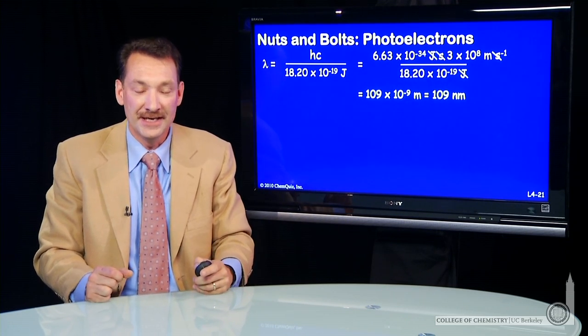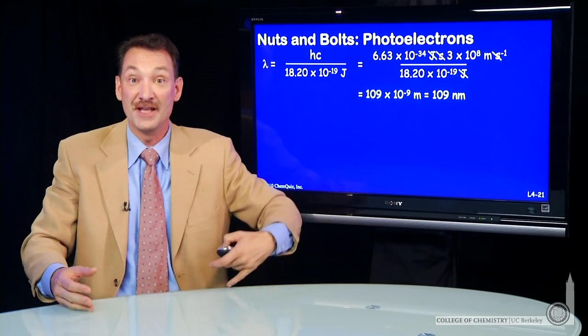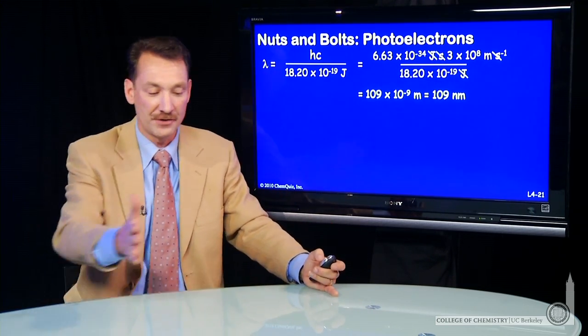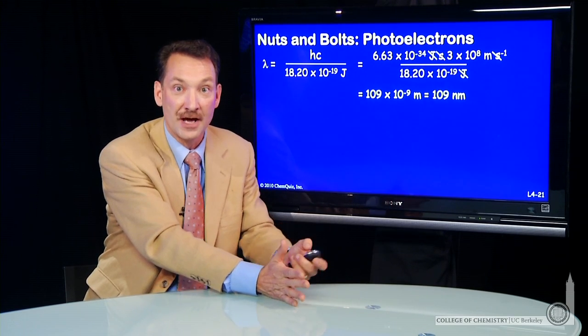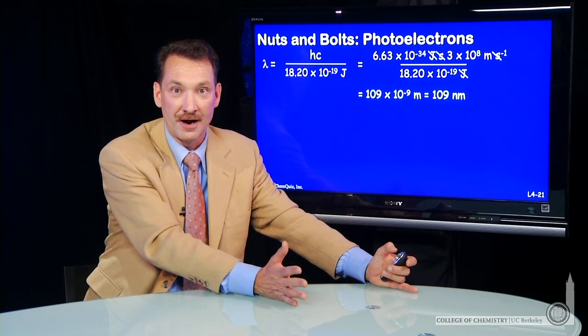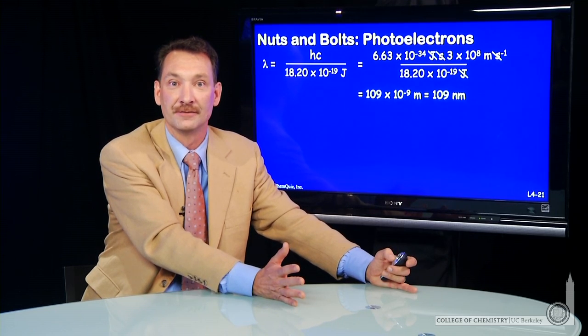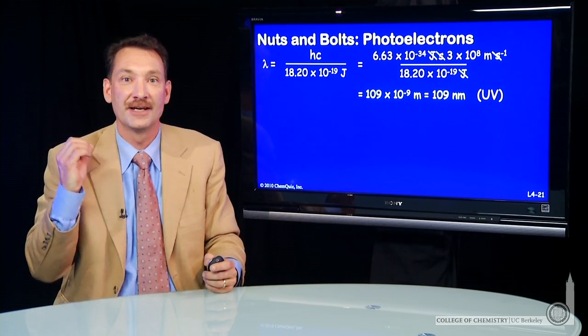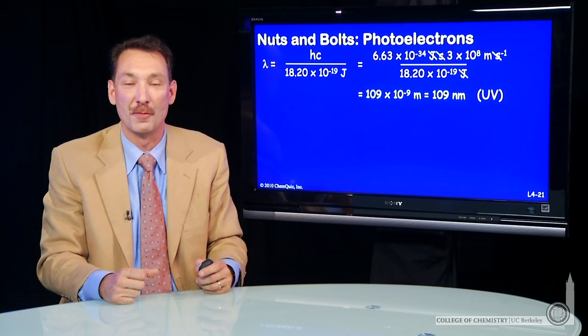109 nanometers is, as we recall, in the UV, the ultraviolet region. We know visible went from 700 down to 400 nanometers, below 400 nanometers at higher energy are the ultraviolet photons. So an ultraviolet photon is required to eject an electron from chromium metal.